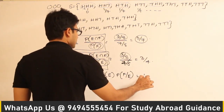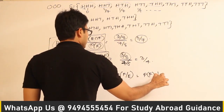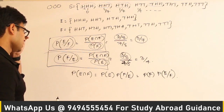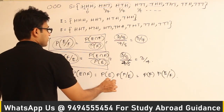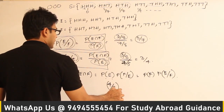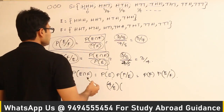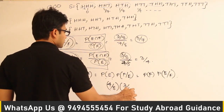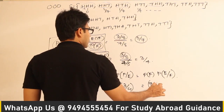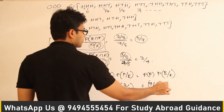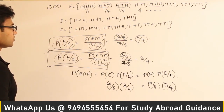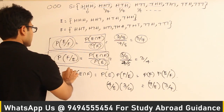We can verify numerically: P(E) = 4/8, P(F|E) = 3/4, so P(E)·P(F|E) = (4/8)·(3/4) = 3/8. Also P(F) = 7/8, P(E|F) = 3/7, so P(F)·P(E|F) = (7/8)·(3/7) = 3/8. Both equal P(E∩F) = 3/8, confirming the multiplication rule.